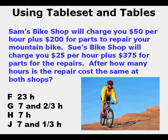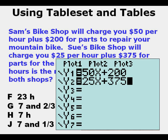Sam's Bike Shop will charge you $50 per hour plus $200 for parts to repair your mountain bike. Sue's Bike Shop will charge you $25 per hour plus $375 for the parts for the repairs. After how many hours is the repair cost the same at both shops?